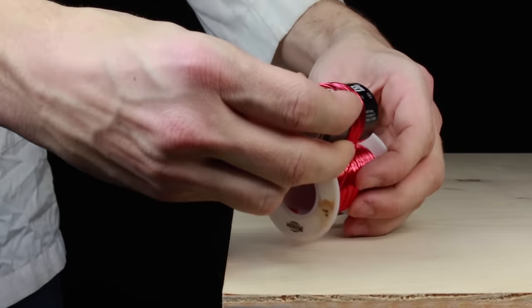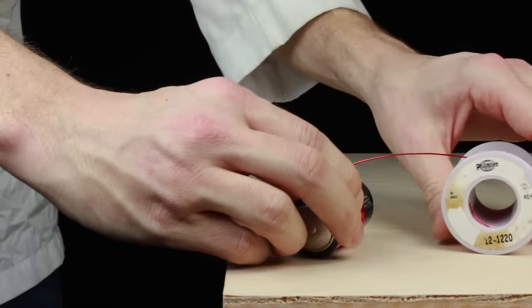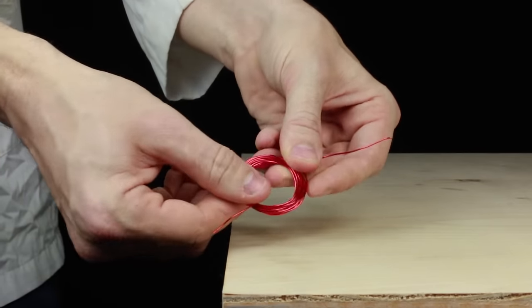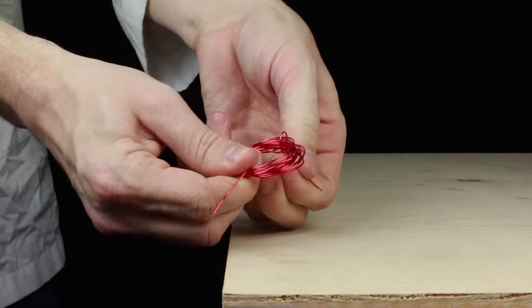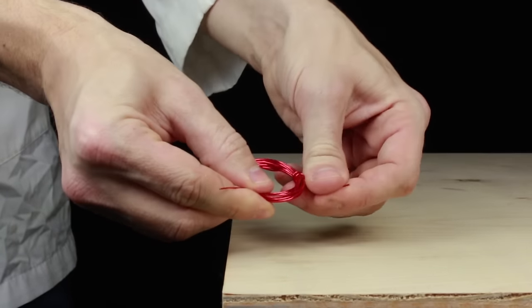Begin by wrapping 20 gauge magnet wire around a D battery until you have about 10 coils. Now take the ends of the wire and wrap them around the coil until they hold it securely in place. Make sure both wires are directly opposite of each other on the coil.